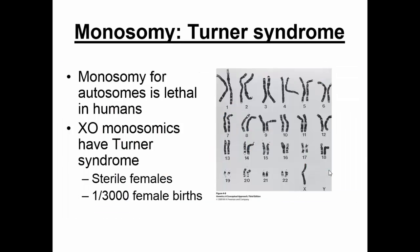There's another example of nondisjunction that leads to monosomy in humans regarding the X chromosome, resulting in Turner syndrome. These females are born sterile, and about one in 3,000 female births have this. Interestingly, humans can tolerate monosomy with their sex chromosomes, but monosomy with autosomes — chromosomes 1 through 22 — ends up being lethal. I don't know the reason for that, but I'm sure there's some type of evolutionary implication.